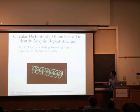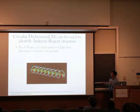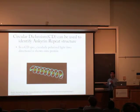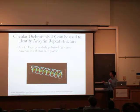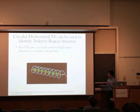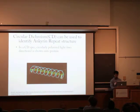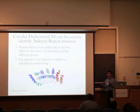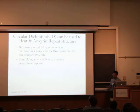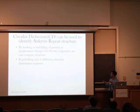To identify ankyrin repeat structure, we use a technique called circular dichroism, where in a CD spectrometer we shine circularly polarized light — light that rotates in two different directions — onto our protein. This image shows left circular polarized light, and there is also right. The helices in proteins react differently to the two different directions, and we can use this spectra to see if the protein is unfolded or folded at a certain temperature. By looking at the unfolding of the protein as temperature changes for the two fragments, we can compare them; if the unfolding rate is different, maybe the structure can determine the response.